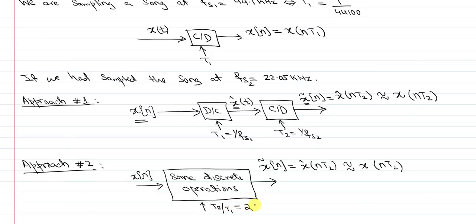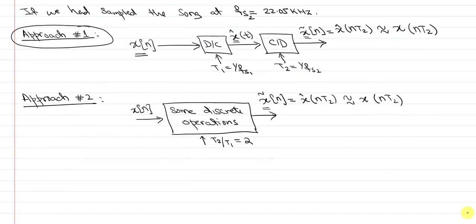So sampling rate conversion is this process that instead of focusing on approach 1, which is not a good approach, we actually do some discrete operations to obtain the same thing that we would have obtained using approach 1. This particular type of sampling rate conversion is called downsampling or decimation. Since t2 over t1 is 2, we call it decimation by a factor of 2.